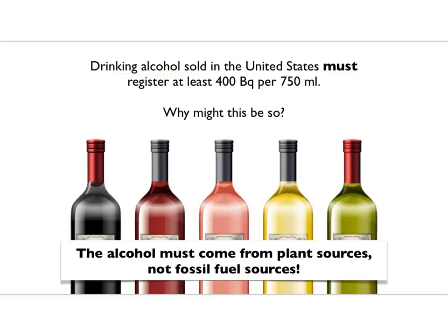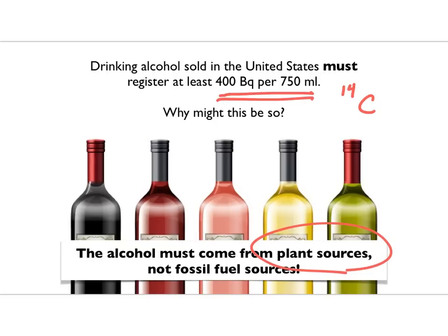Here's the crux of the biscuit: the alcohol in drinking alcohol has to come from plant sources, not from fossil fuels. You can take petroleum products and make ethyl alcohol from them, but you can't sell that as drinking alcohol in this country — you can use it for industrial alcohol. For drinking alcohol, it must come from plant sources, and because it comes from plant sources, the carbon in that ethanol must contain a certain fraction of carbon-14. So drinking alcohol is required by law to have a certain activity — which is kind of awesome.